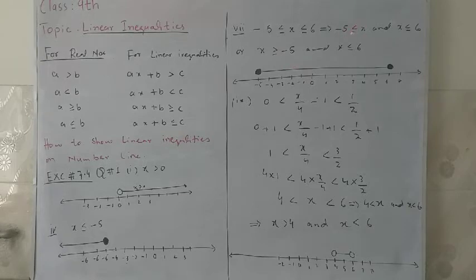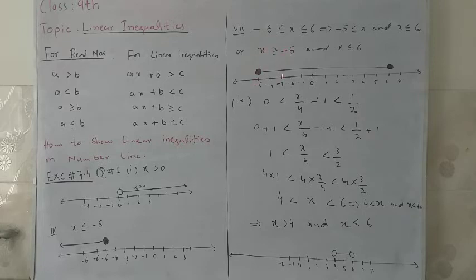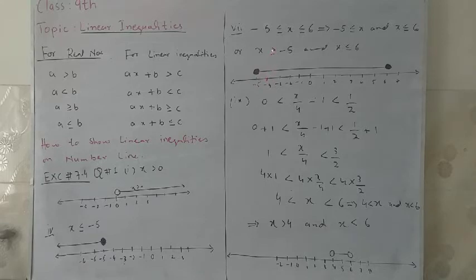So we have changed the inequality by changing the position of both terms. Minus 5 less than or equals to x can be written as x greater than or equals to minus 5, and x less than or equals to 6 stays the same. To show these inequalities on the number line, we will choose minus 5 with a solid circle going right, because all real numbers greater than minus 5 lie on the right. We will choose 6 with a solid circle going left, because x is less than or equals to 6. The required number line for minus 5 less than or equals to x less than or equals to 6 shows all real numbers lying between minus 5 and 6.